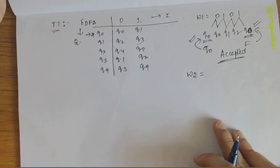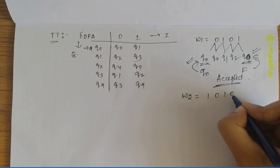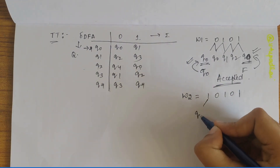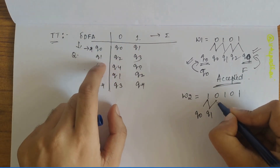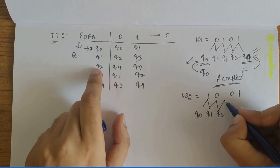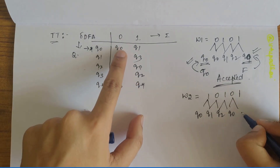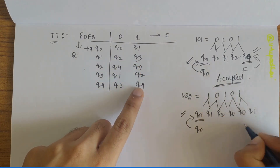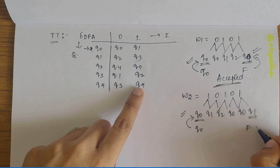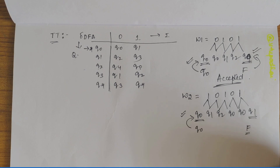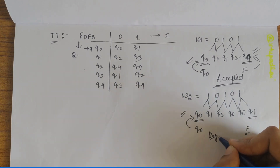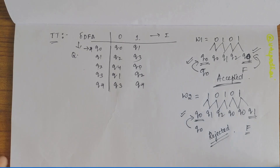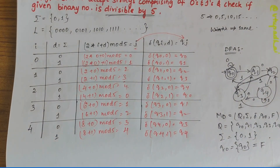Taking another example: w2 = 10101. Starting at Q0: Q0 on 1 → Q1, Q1 on 0 → Q2, Q2 on 1 → Q0, Q0 on 0 → Q0, Q0 on 1 → Q1. We end at Q1, which is not the final state Q0, so this word is rejected. I hope you understood how to solve this. If you have any doubts, let me know in the comments and subscribe to my channel.